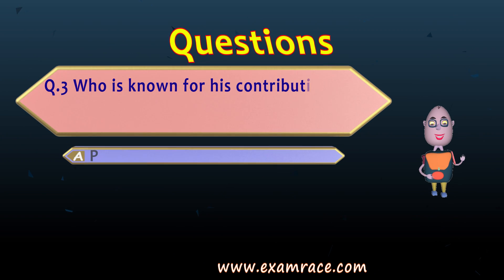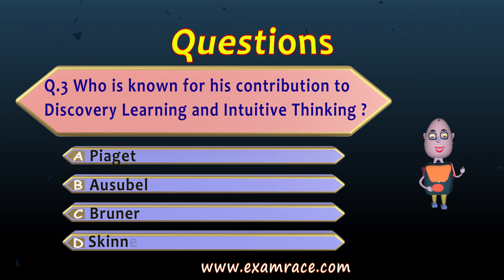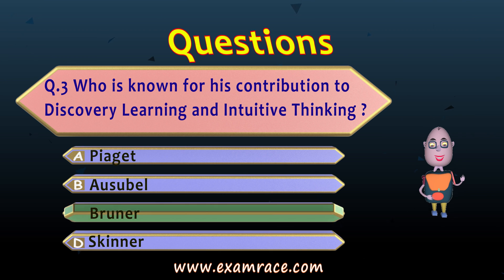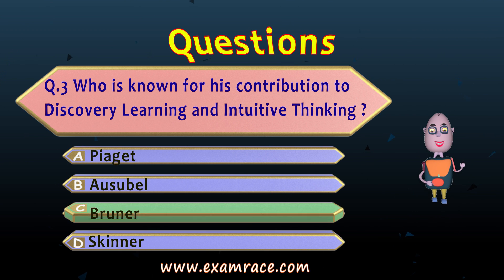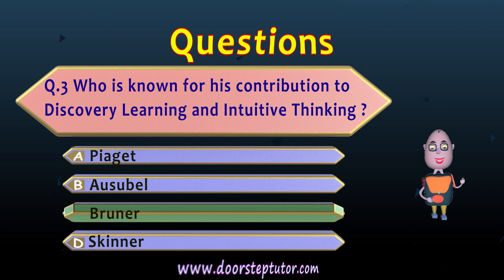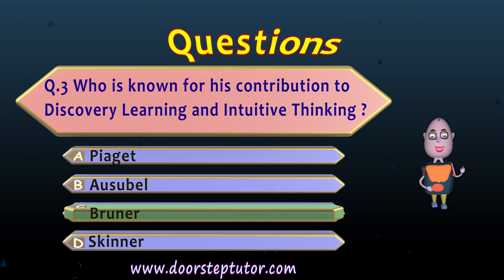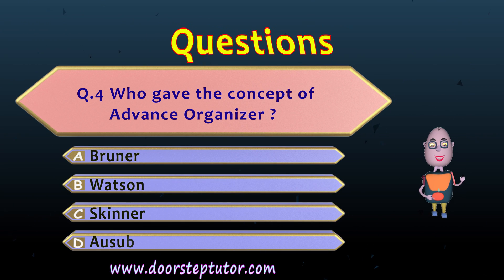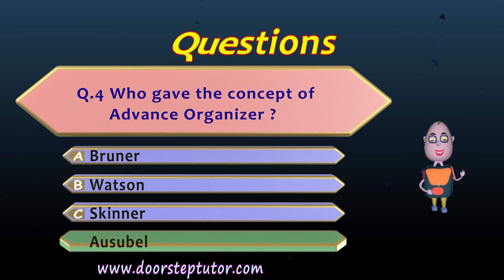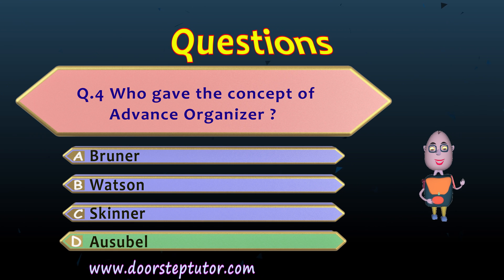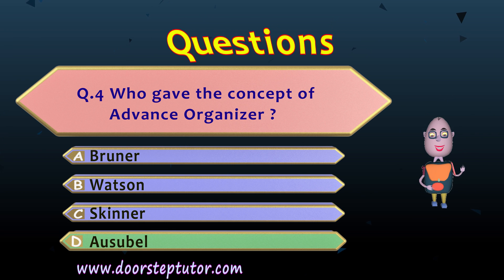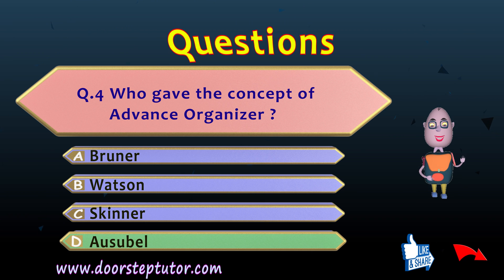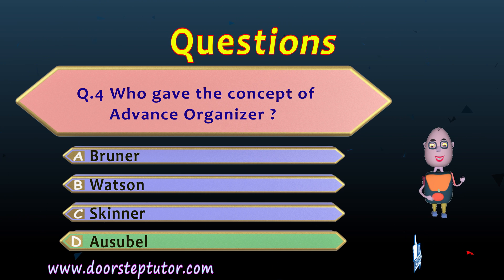Question number three: who is known for his contribution to discovery learning and intuitive thinking? The answer is C, because it was Bruner who made his contribution to discovery learning and intuitive thinking in children. Question number four: who gave the concept of the advanced organizer? The answer is D, because Ausubel, a cognitive psychologist, gave the concept of the advanced organizer. Here we finish cognitive theory.